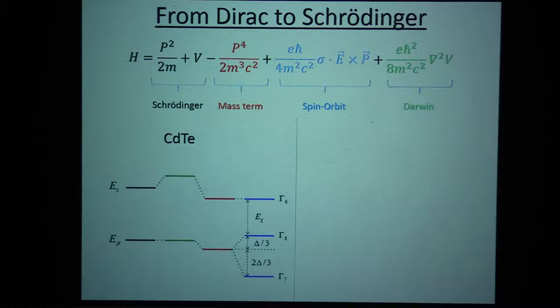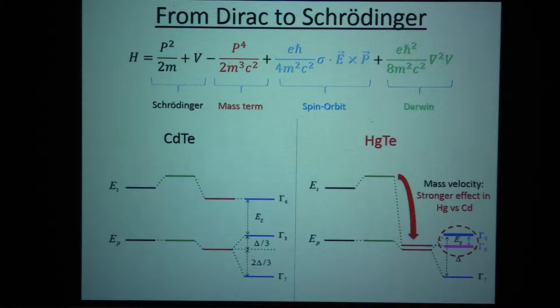So, this was the effect on cadmium telluride. The spin-orbit splits the valence band and leaves the conduction band unchanged, but you see, given that the energy splitting between the s-band and the p-band is to begin with large, this splitting is not doing anything fundamental to the band structure.